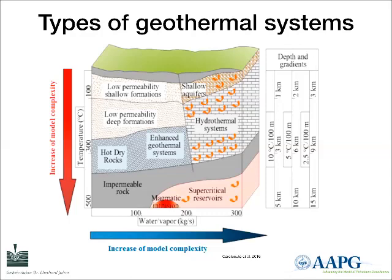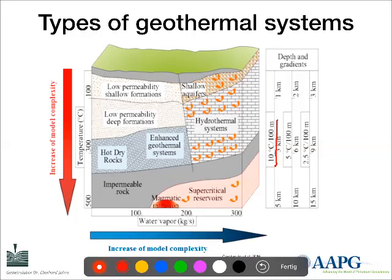Looking at this figure, we see different gradients on the right. A geothermal gradient of 10 degrees Celsius per 100 meters would be in a volcanic area — we would reach 100 degrees already after 1,000 meters. The farther we go to the right, the cooler the system gets and we need more depth and more drilling to reach economically interesting areas. It's not only the heat we need — it's also the water, which may or may not be present, and not only the distance to the heat source, which here is a magmatic system.